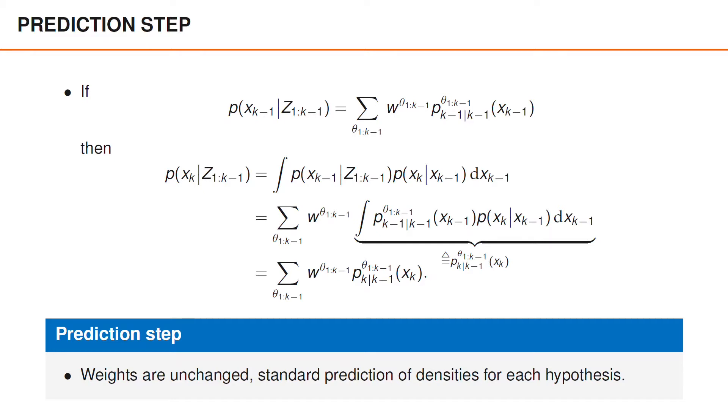We note that the number of hypotheses does not change during the prediction step, and that the probabilities remain the same. The only difference is that we replace the posterior density of x_{k-1}, given a sequence of associations, with the predicted density given the same sequence of data associations.